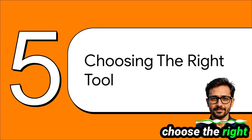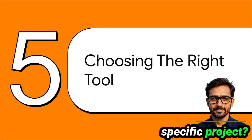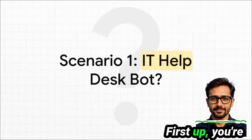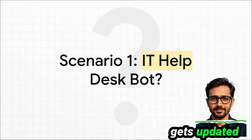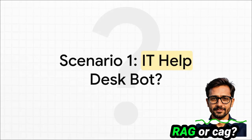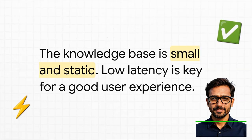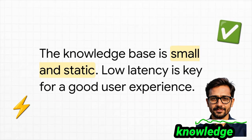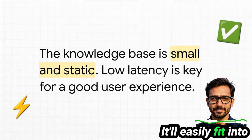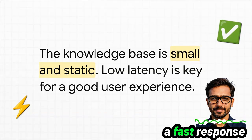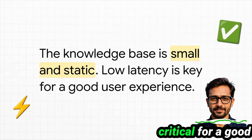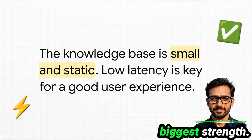How do you choose the right tool for your specific project? Let's play a quick game. First up: you're building an IT help desk bot whose entire brain is a single 200-page product manual that only gets updated maybe a couple of times a year. RAG or CAG? For this one, it's definitely CAG. The knowledge base is small, it'll easily fit into a modern context window, and the information is static so you're not constantly re-computing the cache. For a help desk bot, fast response time is absolutely critical, and that is CAG's biggest strength.